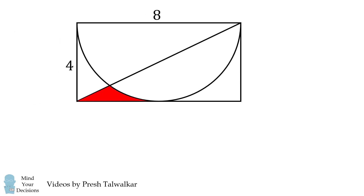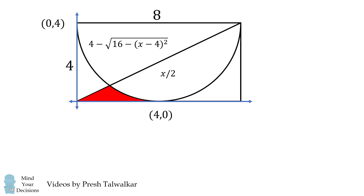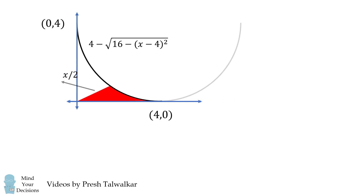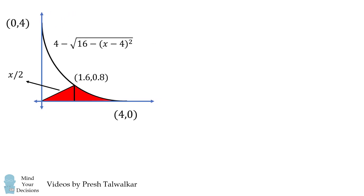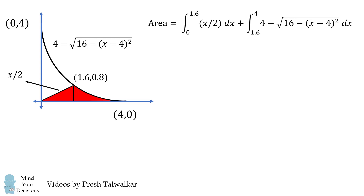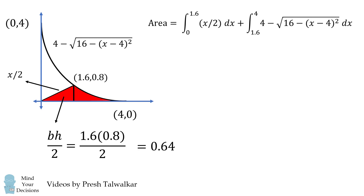So that's one way to solve this problem. There's another way you could have approached it as well. Let's put in a coordinate system and consider solving this using calculus. This point is equal to (4, 0) and this point is equal to (0, 4). The semicircle will have the following equation, and the diagonal will have the equation y is equal to x over 2. We can set up two integrals to solve for the area. The first area will be the area of a right triangle going up to x equals 1.6, and then the rest will be this curved shape going from 1.6 to 4. The first integral is the area of a right triangle, which simplifies to 0.64.